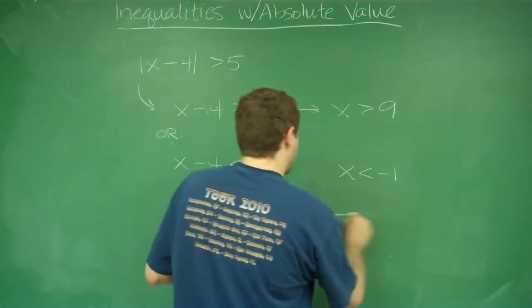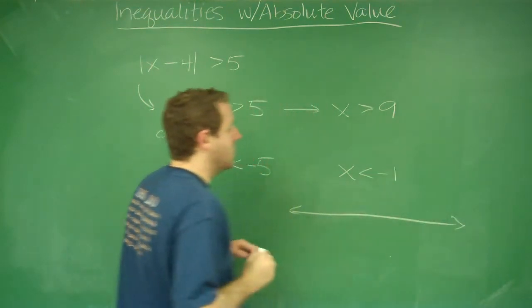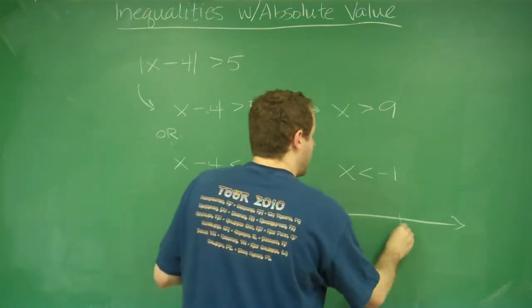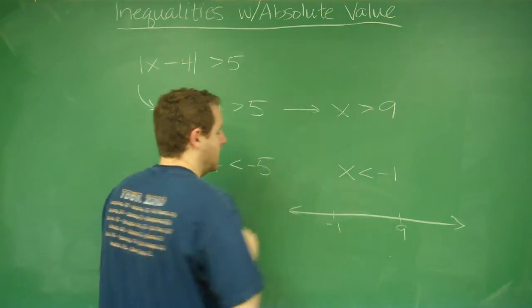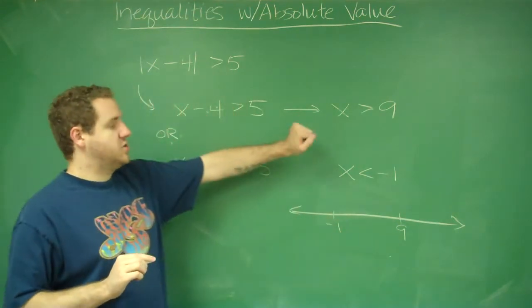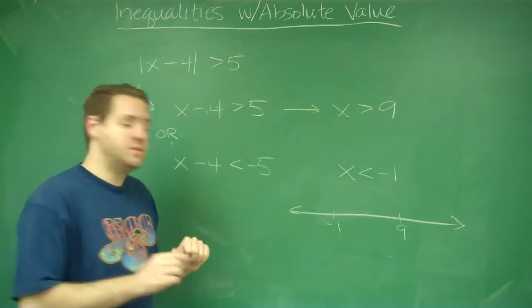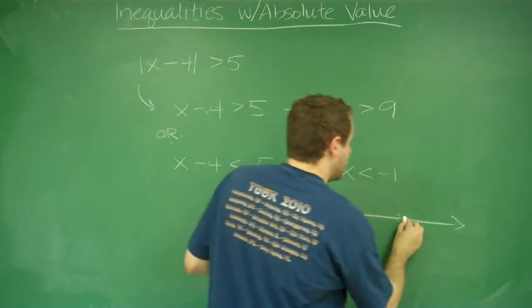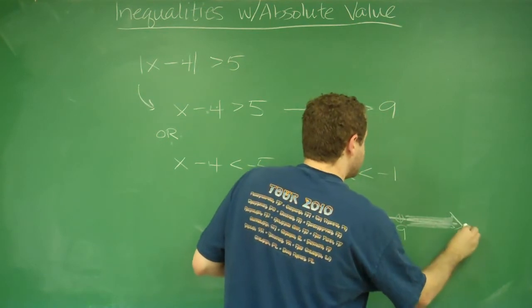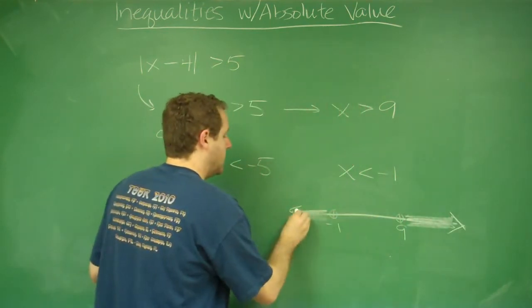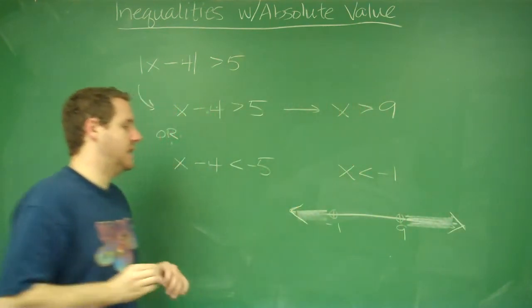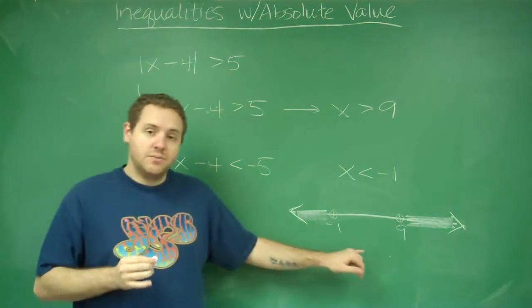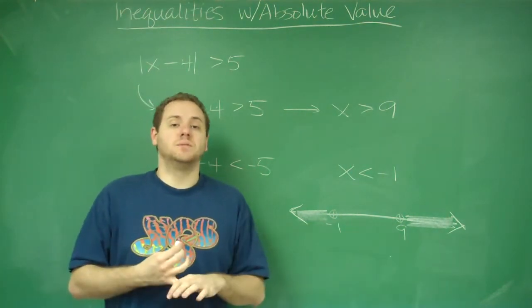So again, if we were to write this on a number line, we would have 9 here, negative 1 here. These are strict inequalities in this case, so both of these are going to be open circles. And we could have anything greater than 9, or we could have anything less than negative 1. But not negative 1 or 9 themselves or anything in between.